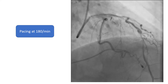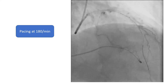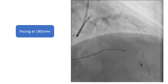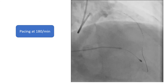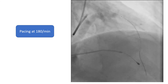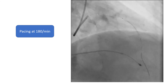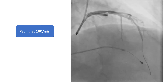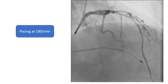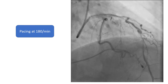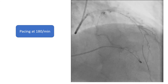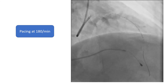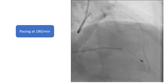So in this case, we inserted a transvenous pacemaker and induced rapid ventricular pacing at a rate of 180 per minute. During pacing, we positioned the stent at the desired location and deployed it.